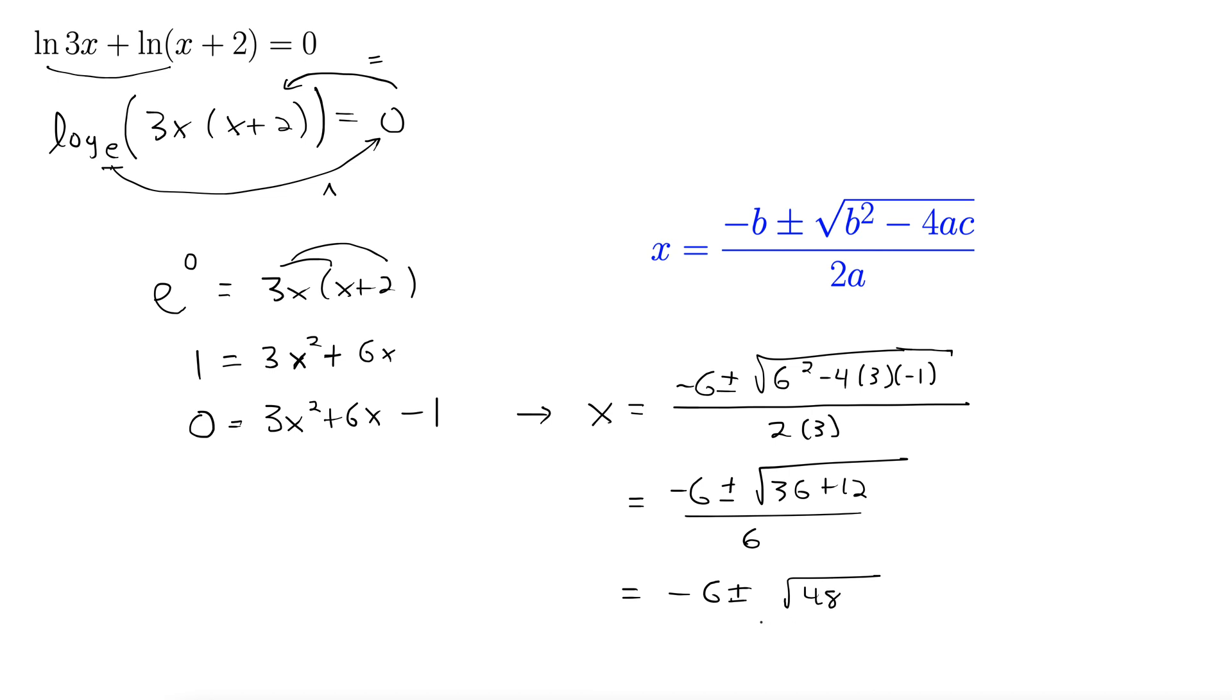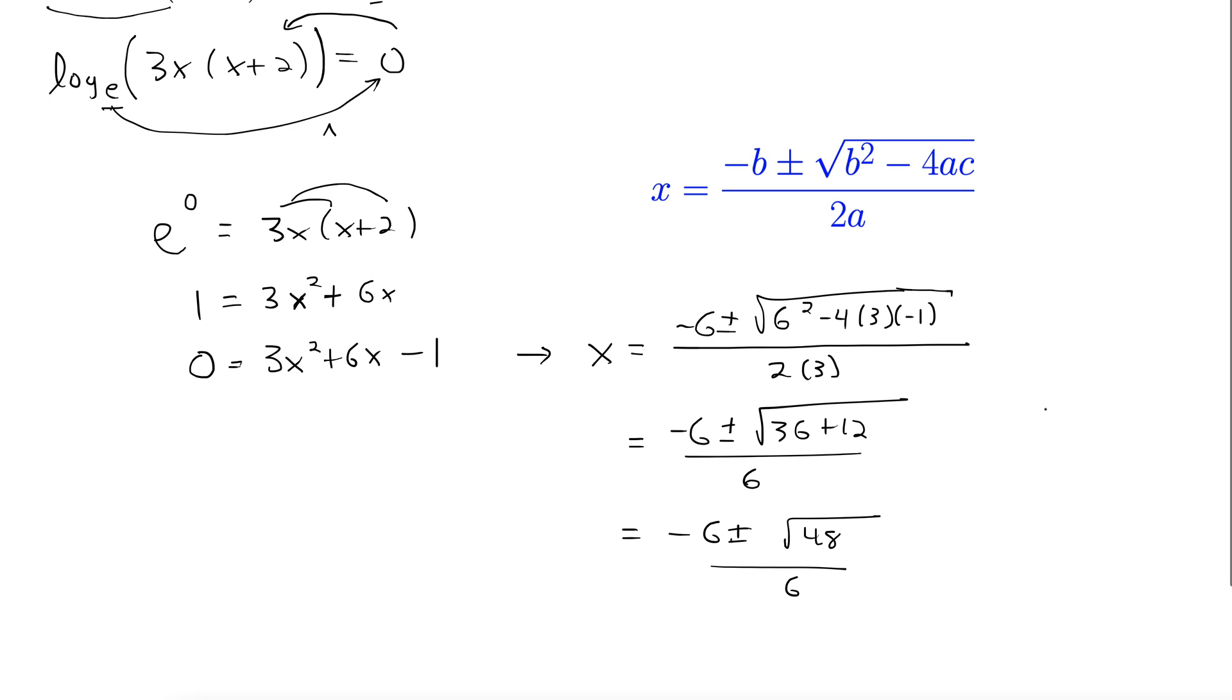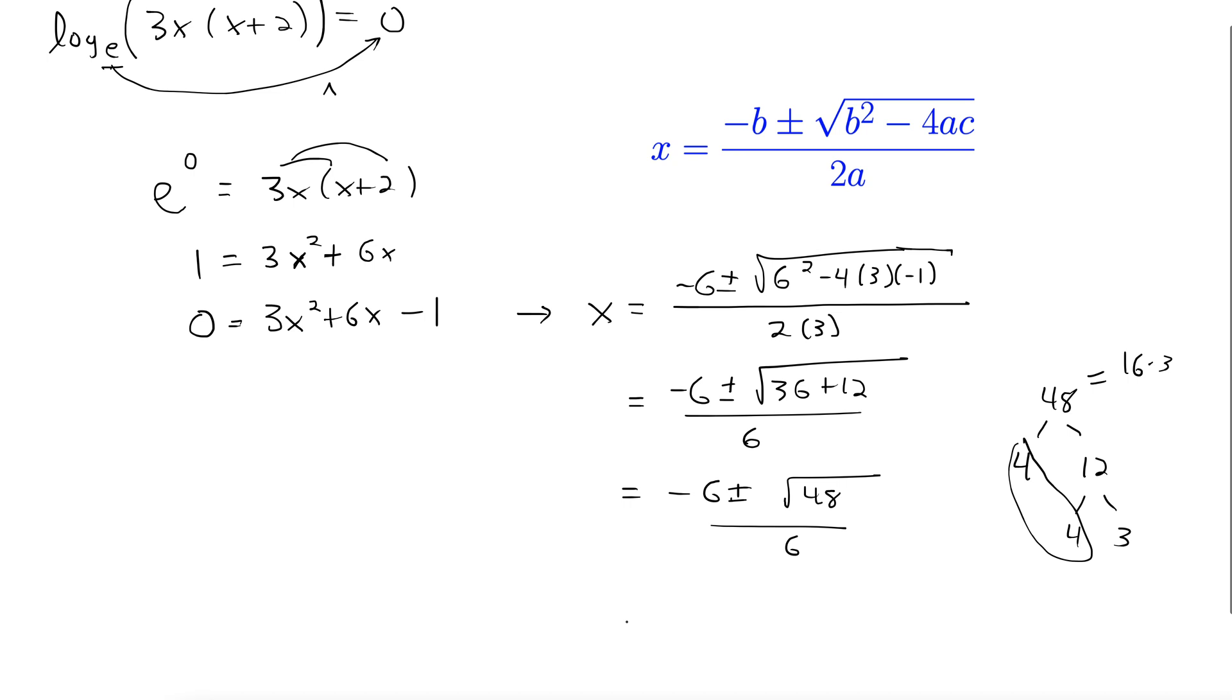Negative 6 plus or minus, well, this is 48 all over 6. So I'm looking for a perfect square inside of 48. You might want to do a factor tree here. That's 4 times 12. 12 is 4 times 3. There's a perfect square. So 48 is actually 16 times 3. And 16 would pop out as a 4 in the front. So this is negative 6 plus or minus 4 rad 3 over 6.